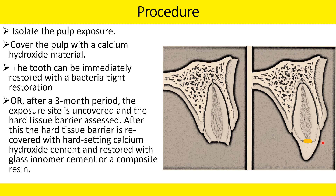A second option exists when we want to reassess the case — typically if the exposure size is slightly larger and we are unsure whether a hard tissue barrier will form. We recall the patient after three months, remove the restoration, and check for reparative dentine formation. If it is intact and well formed, we replace it with a layer of calcium hydroxide followed by a final restoration of GIC or composite.